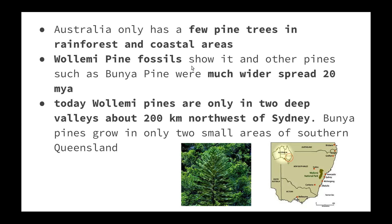Australia only has a few pine trees, in rainforests and coastal areas. Wollemi pine fossils show that it and other pines such as the Bunya pine were much more widespread about 20 million years ago. Today, Wollemi pines are only found in two deep valleys about 200 kilometres northwest of Sydney, and Bunya pines grow in only two small areas of southern Queensland. Over time, as temperature has increased and areas have dried out, only these particular locations still meet the needs of these two pine species.